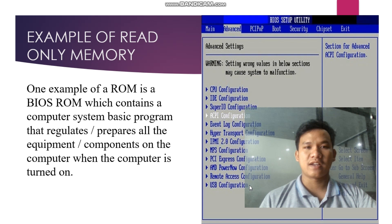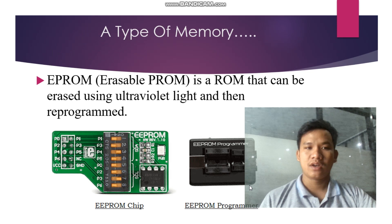One example of a ROM is BIOS ROM, which contains a computer system basic program that regulates or prepares other equipment or components on the computer when the computer is turned on.